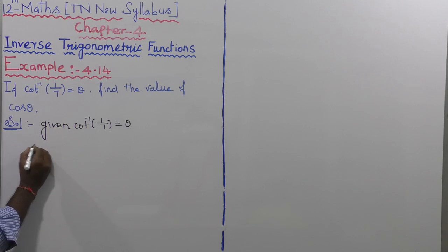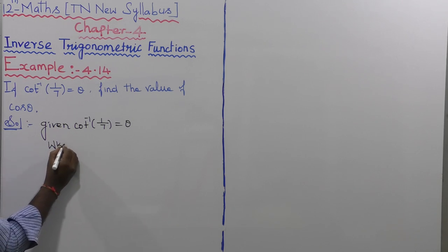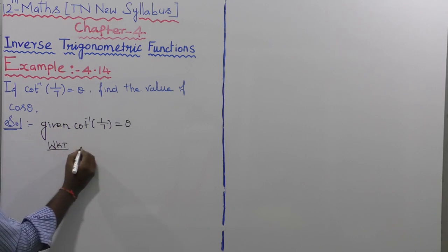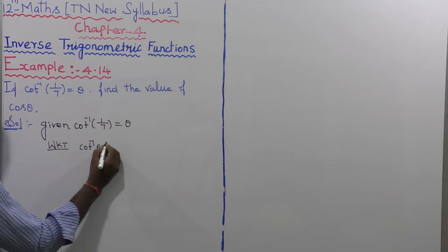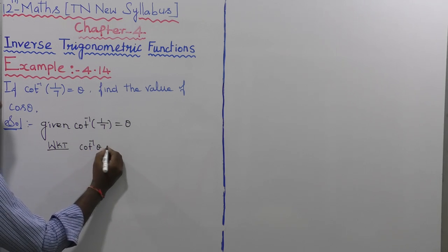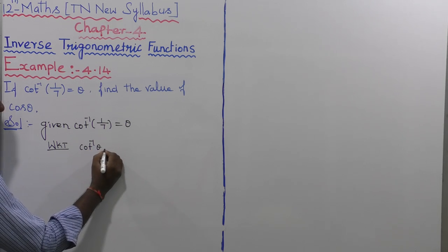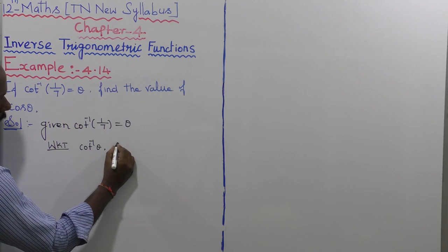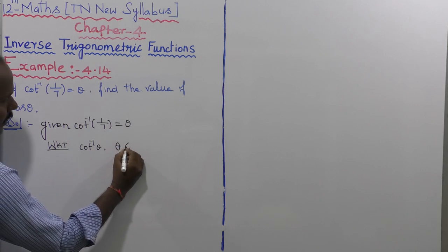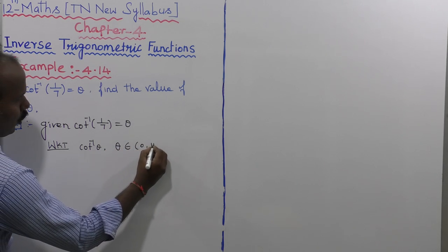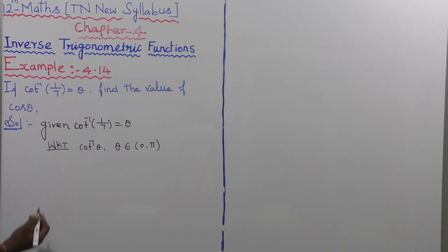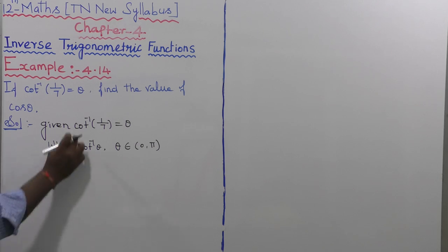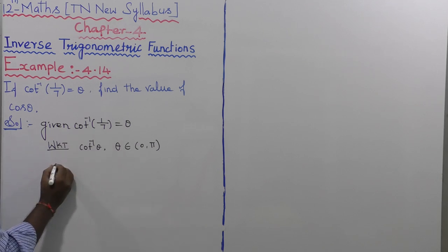We know that cot inverse exists for the principal value limit of the open interval 0 comma pi. By the definition of cot inverse, cot inverse of x is equal to theta where theta belongs to the open interval 0 comma pi.